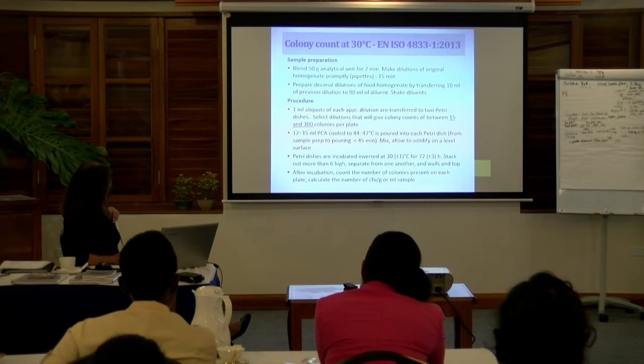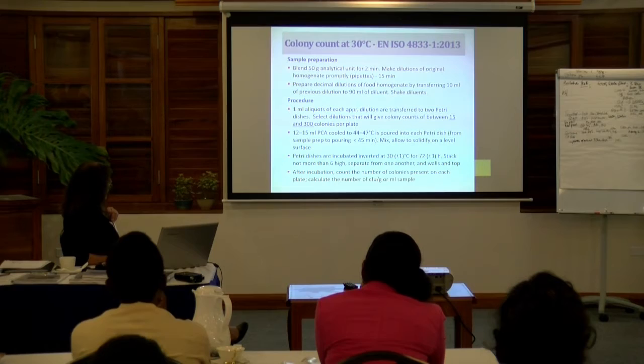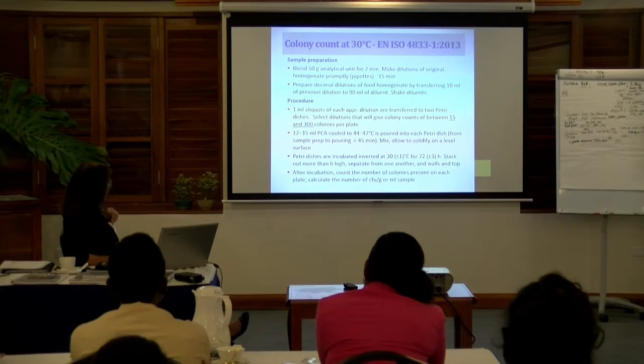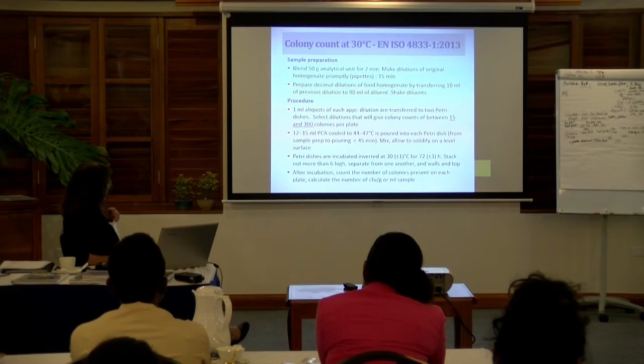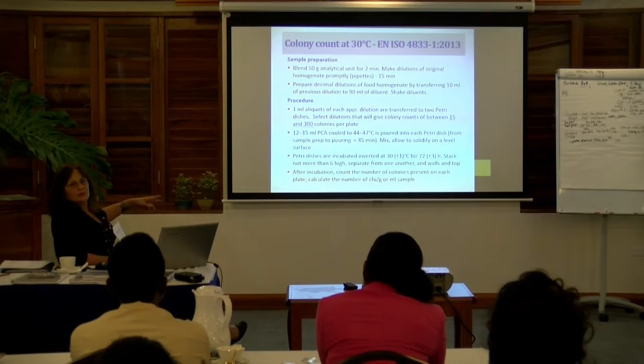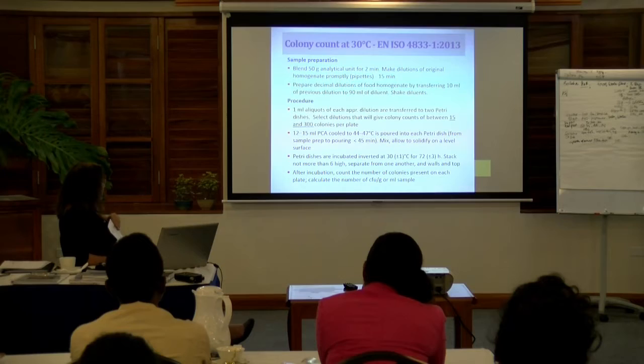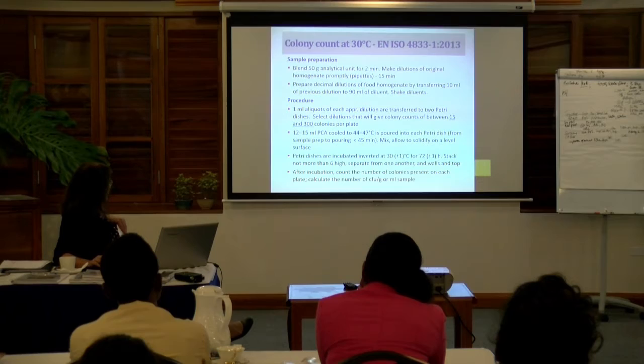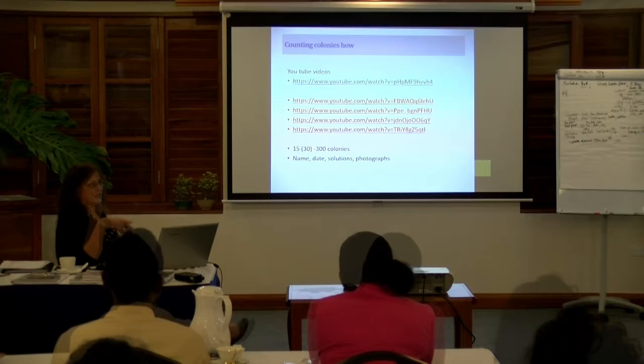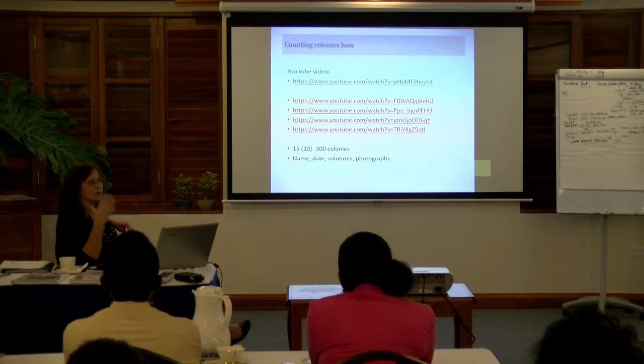You prepare the plate count agar cooled to 44 to 47 degrees in a petri dish, mix, allow to solidify, and incubate inverted at the given temperature. The standard also tells you how high you can stack samples and how to put them in the incubator. After incubation, you count the number of colonies on the plate and calculate the number of colony-forming units. There are also links to YouTube videos which are quite helpful for how to count colonies, how to dilute, and how to do serial dilutions.